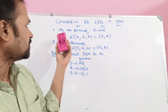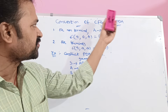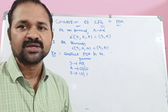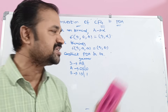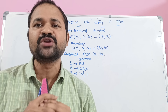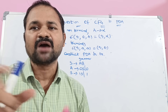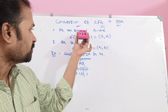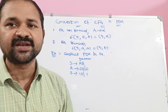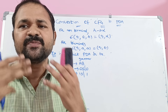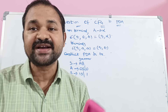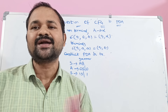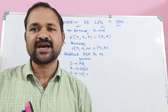Let us discuss the conversion of CFG to PDA. Here, CFG — context-free grammar — is the input, and for the corresponding CFG, we need to find the PDA — pushdown automata. In CFG, our focus will be mainly on the productions, whereas in PDA, our focus will be mainly on transition functions, that is delta. So for the corresponding production rules, we need to find out the delta transition functions. That is our target here.